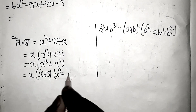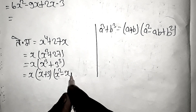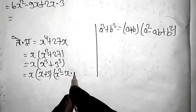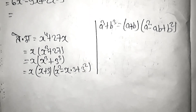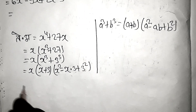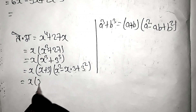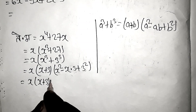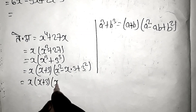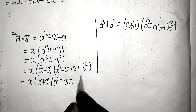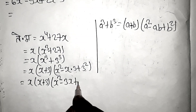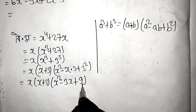So a is x and b is 3. We get x plus 3 times x squared minus x times 3 plus 3 squared, which gives x plus 3 times x squared minus 3x plus 9.